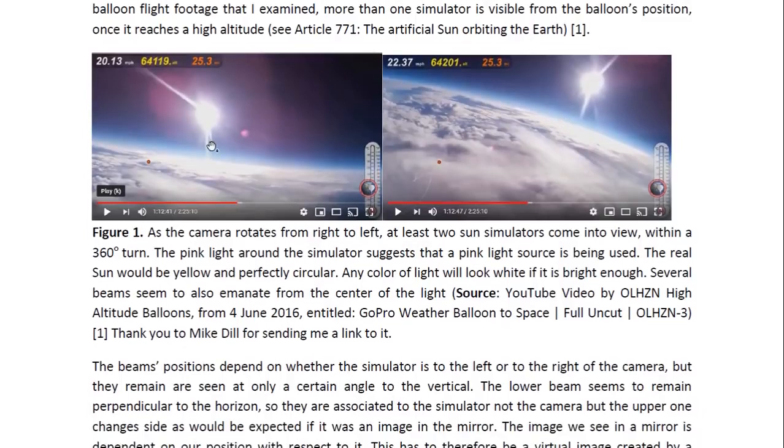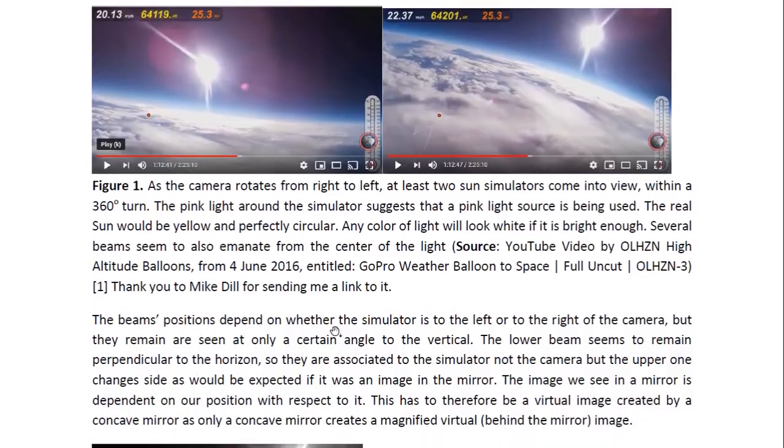So, as I said, there are these beams. As you can see, the beams are, at least this one, seems to be perpendicular to the horizon, or very close to perpendicular to the horizon. And this one is at a certain angle to the vertical, on different sides. And that is significant. So the beam's positions depend on whether the simulator is to the left or to the right of the camera. And you can see this long beam here is to the left, and here it's to the right. And if you watch the video, you can actually see it shifting from one side to the other. But it doesn't shift through all these angles. It's either on this side at a certain angle, and as the camera's position changes, it suddenly disappears and then appears on the other side.